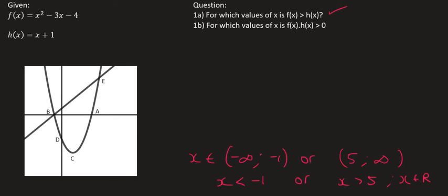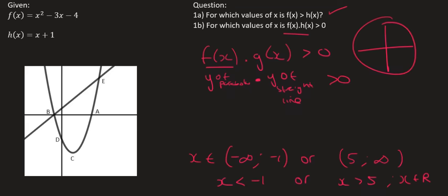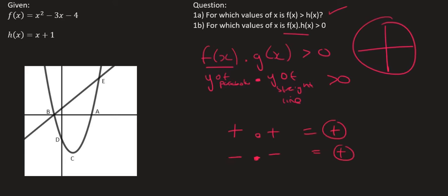All right, so I trust that that question now makes sense. Now we're saying, for number b, for which values of x is f of x times h of x positive? Now this looks weird, I know, but let me show you how to interpret this. f of x means the y values of the parabola, so the y value of parabola. And then g of x is the y value of the straight line. Now they want to know, when you multiply those two together, when would you end up with something that is bigger than 0? So how could you end up with a positive if you're multiplying two things together? Well, if you multiply a positive with a positive, that gives you a positive. And when you multiply a negative with a negative, you also get a positive.